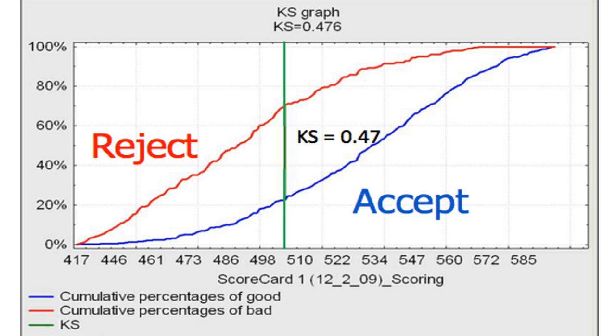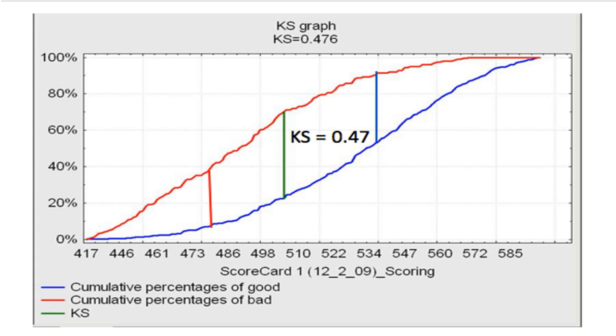But in many cases, it's not that easy to know where to put the threshold simply by knowing the KS statistic. For example, what if you want to employ a high-risk strategy and choose a score with less distance but accepts more good customers? Conversely, what if you want to accept less bad customers and therefore choose a higher score threshold? The score that gives you the best distance isn't always the best score to use.